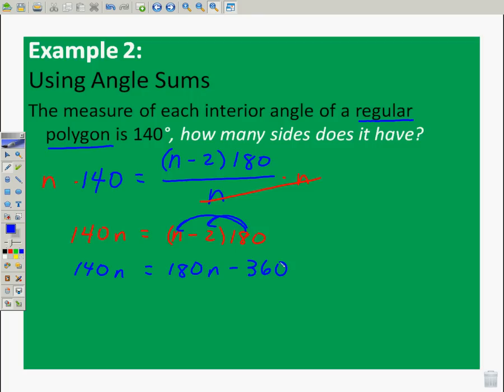Check that out for a minute. Now I can combine these like terms. I can say I can subtract 180n minus 180n. This goes away. So, I've got negative 40n is equal to negative 360. Be sure to mind the negative signs. I've got negative 40n is equal to negative 360. So, I'm going to divide by negative 40.